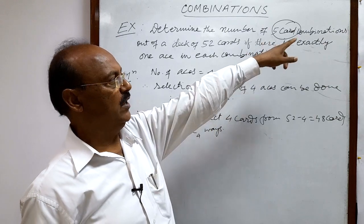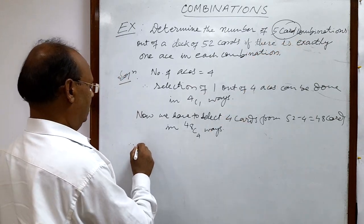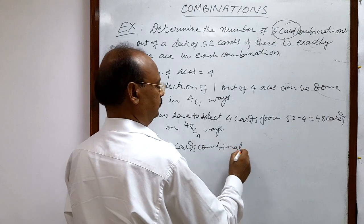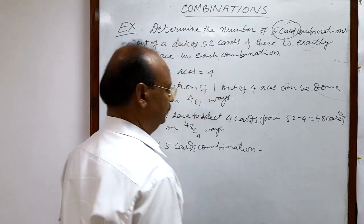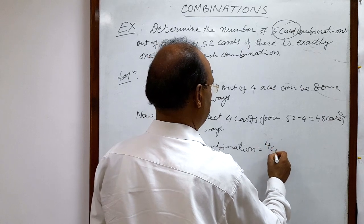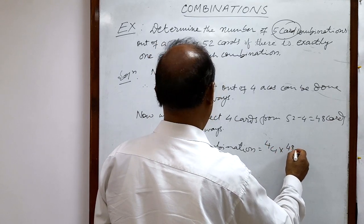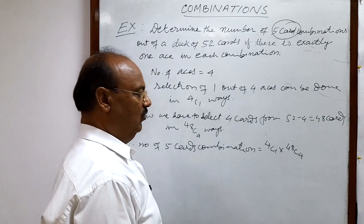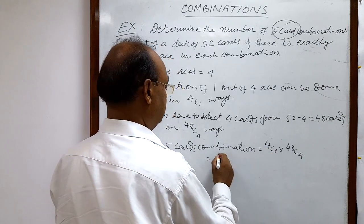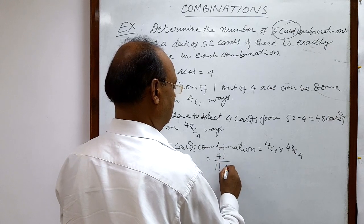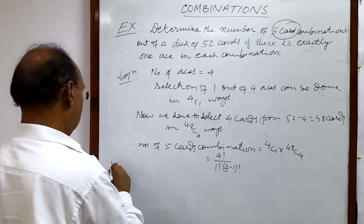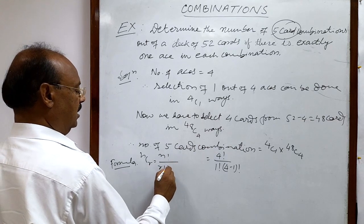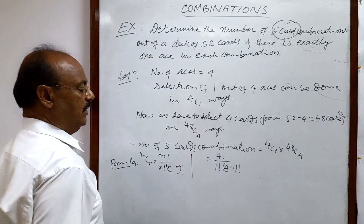We have to select four cards from 48 cards in 48C4 ways. By the fundamental principle of counting, these two numbers will be multiplied together to make five card combinations. So the number of five card combinations is 4C1 multiplied by 48C4. Now 4C1 can be evaluated using the formula: nCr equals n factorial divided by r factorial into (n minus r) factorial.